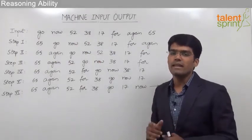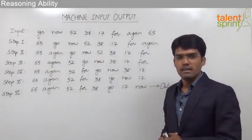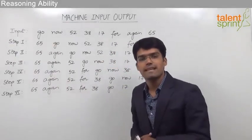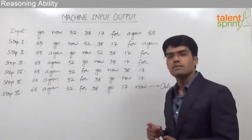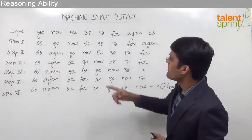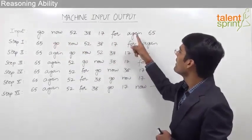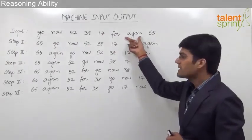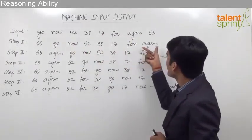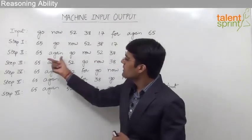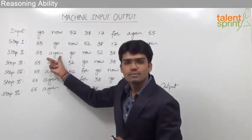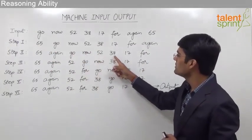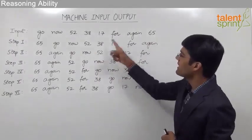The remaining elements are simply pushed aside — meaning in each step only one element is moved. In step 2, we know that after 65 a word has to take the second position, and that word should be the first in alphabetical order. Among the given words — go, now, for, and again — the word that comes first alphabetically is 'again.' So in step 2, the word 'again' is brought to the second position.